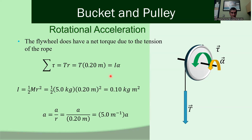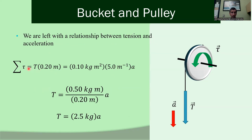Replacing alpha with A divided by R, which equals 5 inverse meters times A, I've turned my torque equation into translational quantities — tension and acceleration. This connects what's happening with the pulley to the descending bucket. So tension equals 0.5 kilogram meters divided by 0.2 meters times acceleration. I still have two unknowns, tension and acceleration, so I need the bucket equation as well.